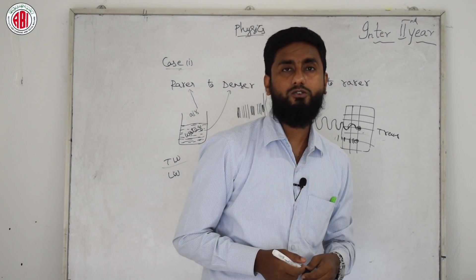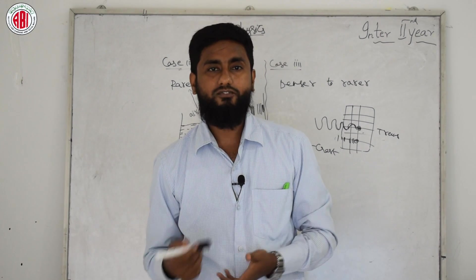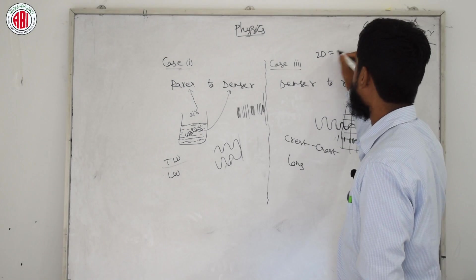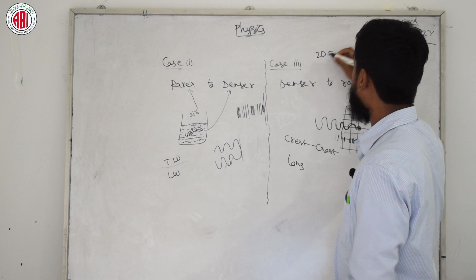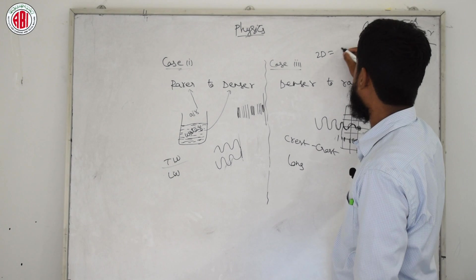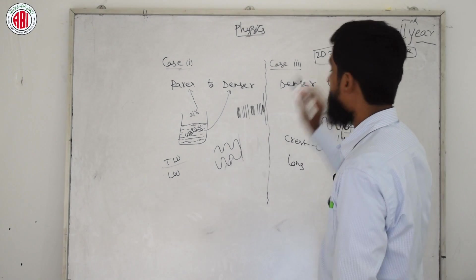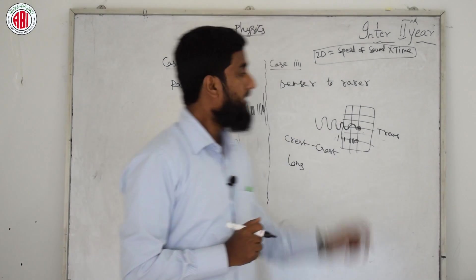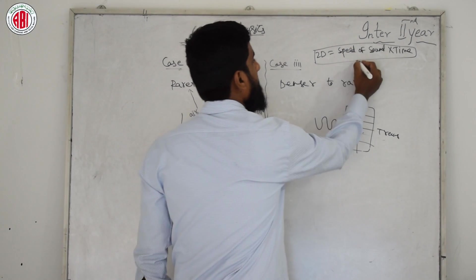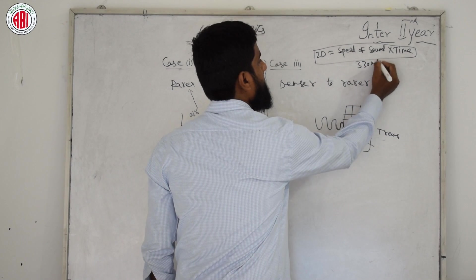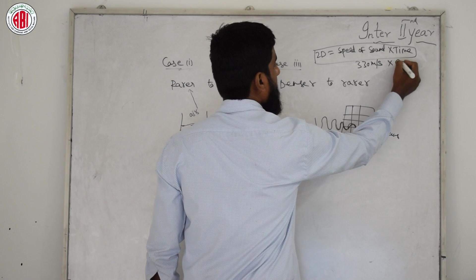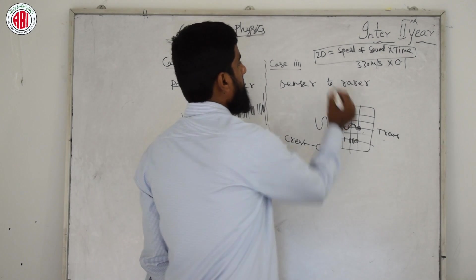Echo: what is echo and what is its formula? The formula for echo is: 2d = speed of sound × time. Here d is the distance. The speed of sound is approximately 330 meters per second. The minimum time required for echo is 0.1 seconds.